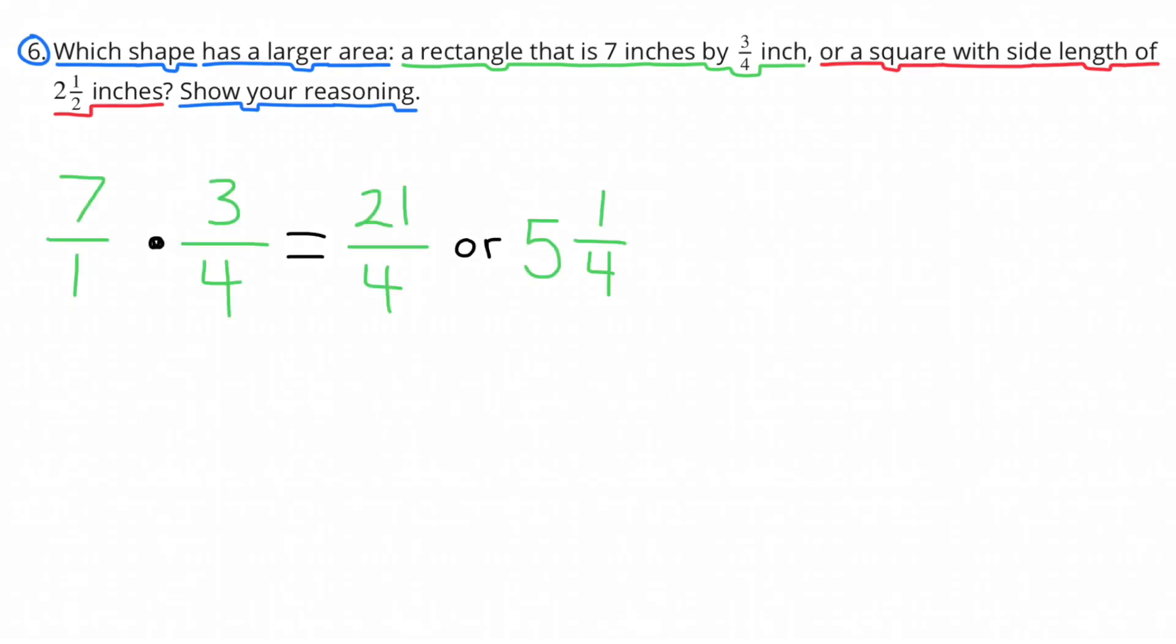7 inches can be represented as 7 over 1, and 7 over 1 times 3/4 inches equals 21/4, or 5 1/4 inches.